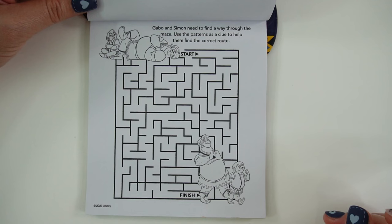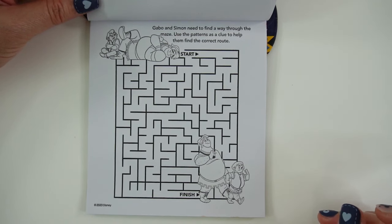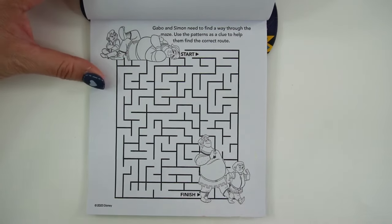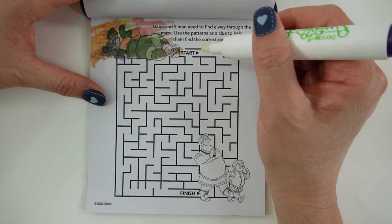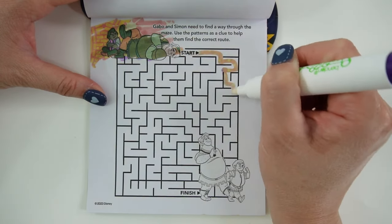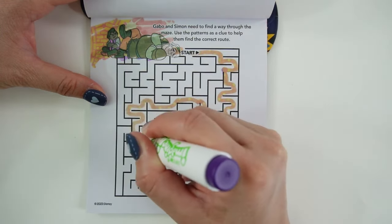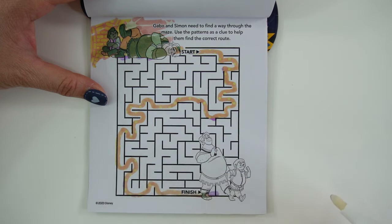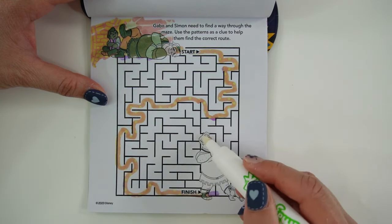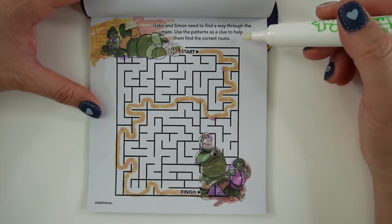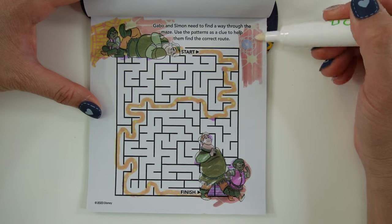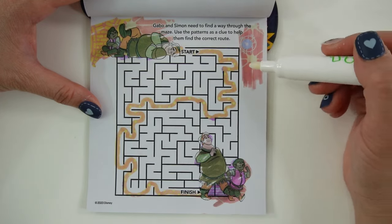On this page it says, Gabo and Simon need to find a way through the maze. Use the patterns as a clue to help them find the correct route. Okay, here they are. Let's go. Oh look, we did it in one try. Here they are down here. All right, where's our wish? There it is, we did it.